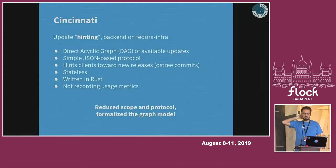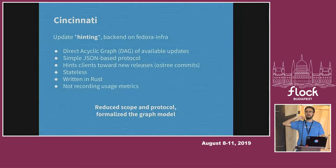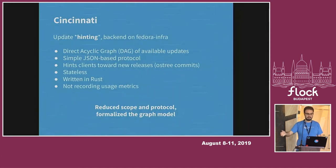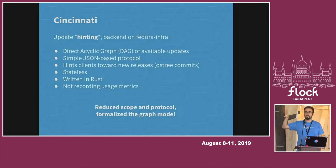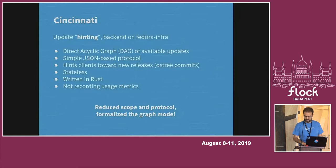The other top component is Cincinnati. Cincinnati is the back end — more or less what we had before with CoreUpdate, except that now it only does one thing: update hinting. Clients periodically poll this server and the server returns a JSON object which is a DAG — a directed acyclic graph — of the available updates, just hinting clients about what updates are available. This component is completely stateless. It's written in Rust, deployed in the Fedora infrastructure, and we no longer record any usage metrics. By doing this we reduce the scope, reduce the protocol, and formalize the graph model for auto-updates.